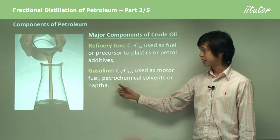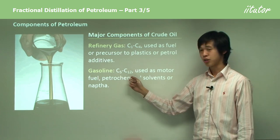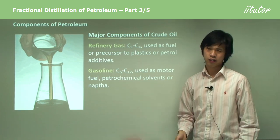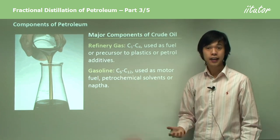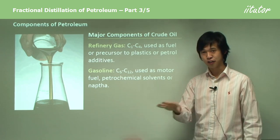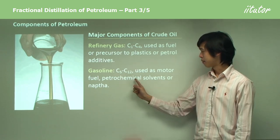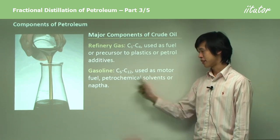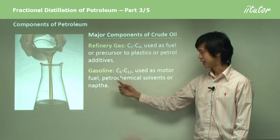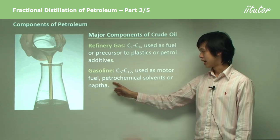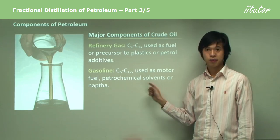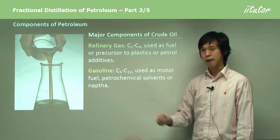Gasoline is C5 to C12. On average, we like to think of it as C8, or octane — that's the average molecular size. It's used as motor fuel, obviously, because it's petrol or gasoline. It's also a petrochemical solvent, or this thing called naphtha.